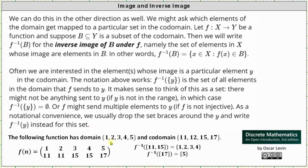Now let's look at the same function again and examine some inverse images. We have the same function, same domain, same codomain. On the right, the inverse image of the set with elements 11 and 15 is equal to the set containing all elements from the domain for which 11 and 15 are the images. Notice this is the set containing the elements 1, 2, 3, and 4.